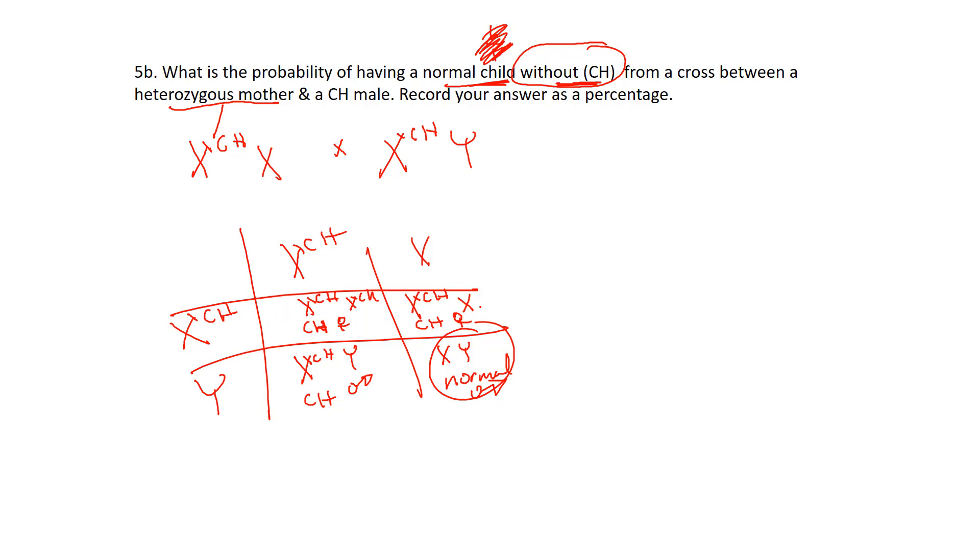Now, again, because they're not asking for male or female, it's just a child. We take a look at the four boxes. So there's four boxes. How many of them are normal? One out of four is normal. They want their answer as a percentage. So that's 0.25. Multiply that by a hundred to be 25% chance of those two parents having a normal child.